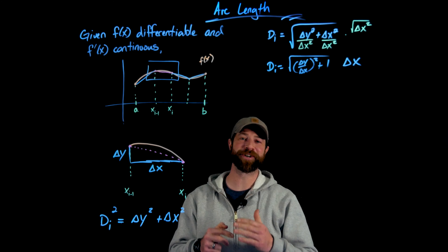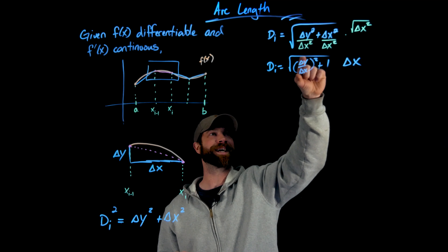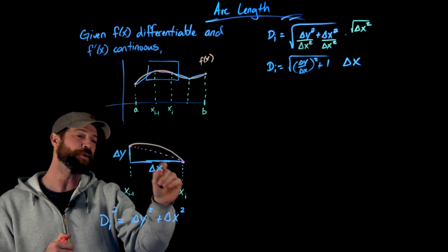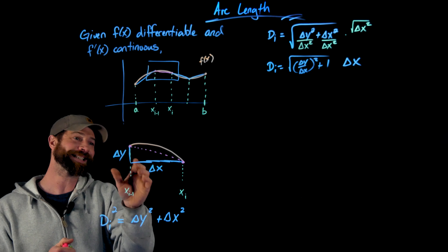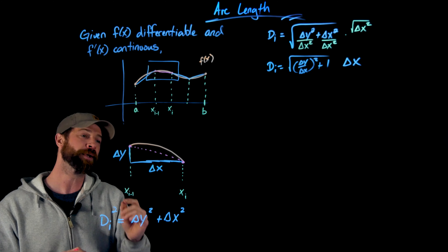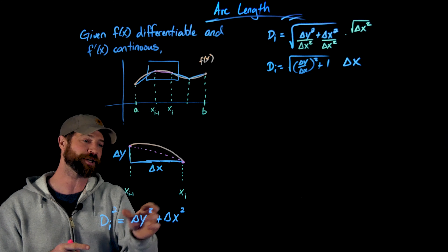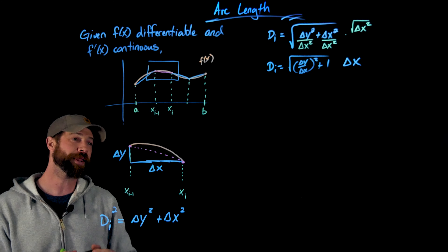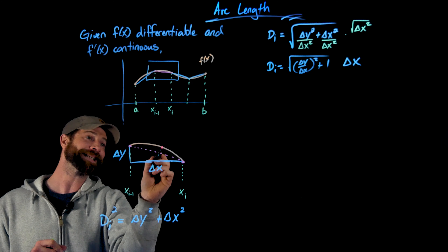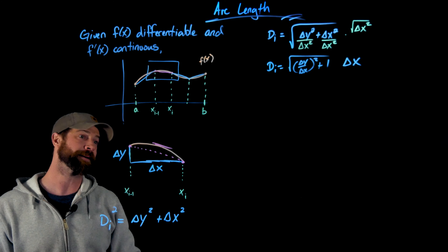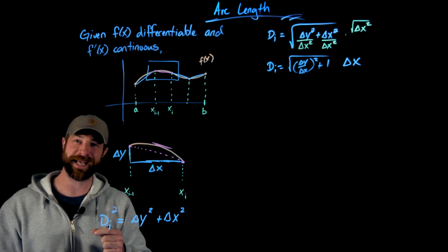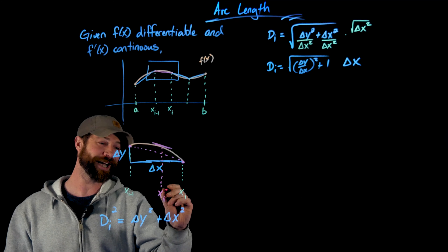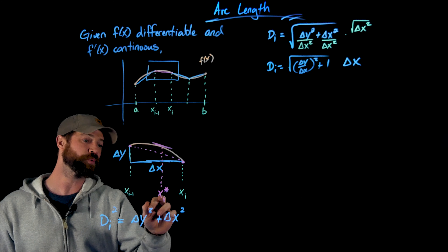We're going to use our good friend the mean value theorem. Going back to delta y over delta x — for this given interval, that's the rate of change over the interval, the slope between these two endpoints. The mean value theorem says: if we have a continuous differentiable function on an interval, then there exists a point somewhere on the interval such that the slope at that point equals the slope of the endpoints. So for any given interval, there absolutely exists an x_i*, that represents that slope.